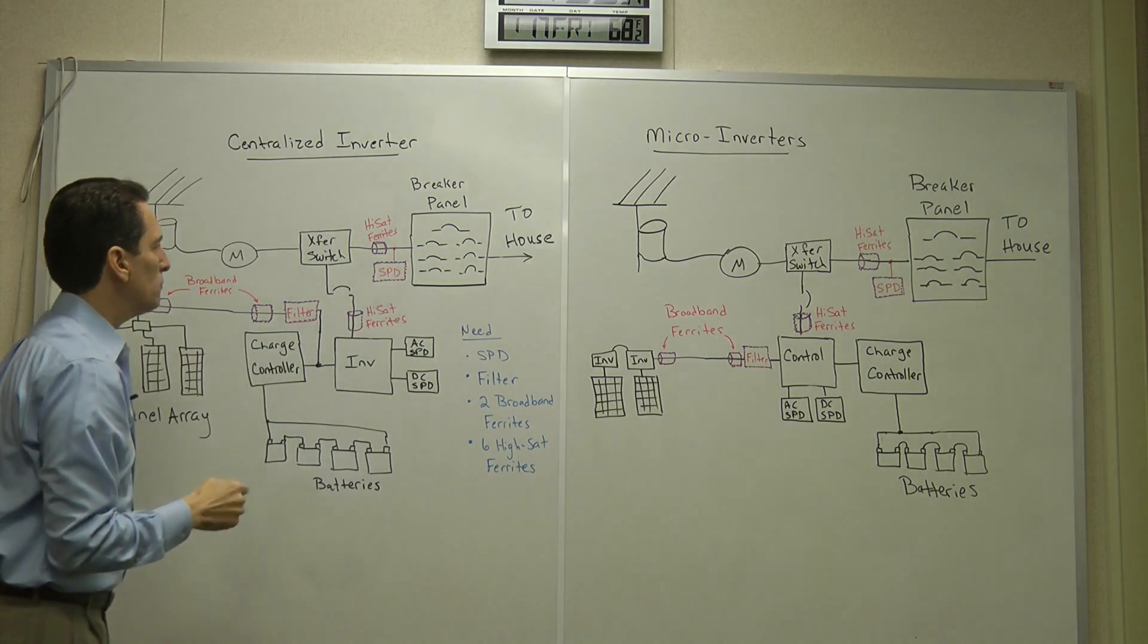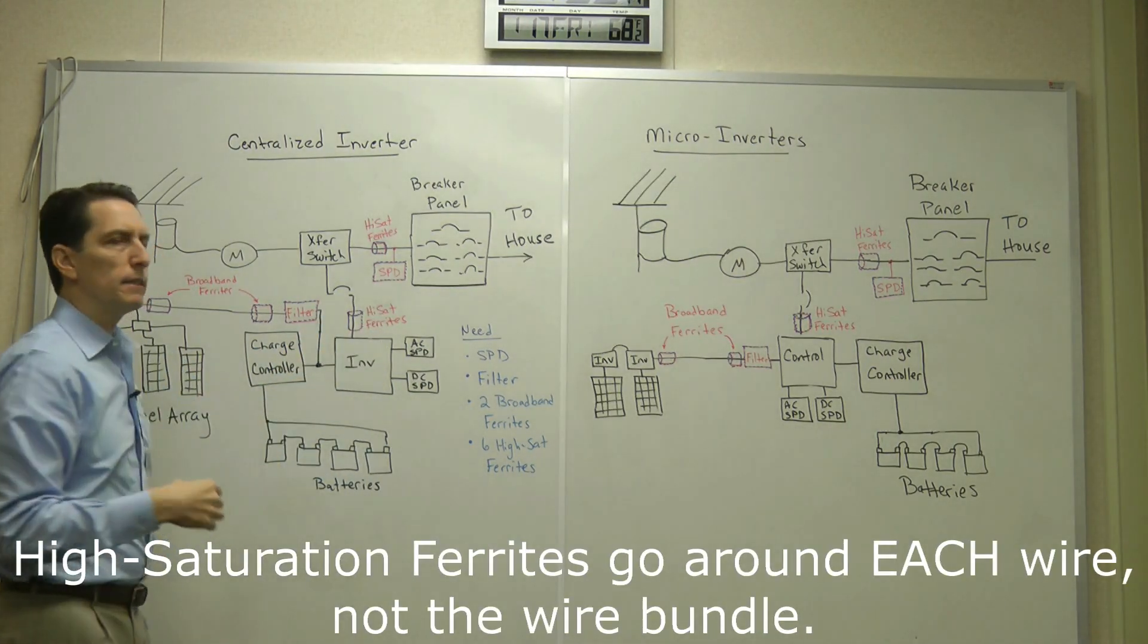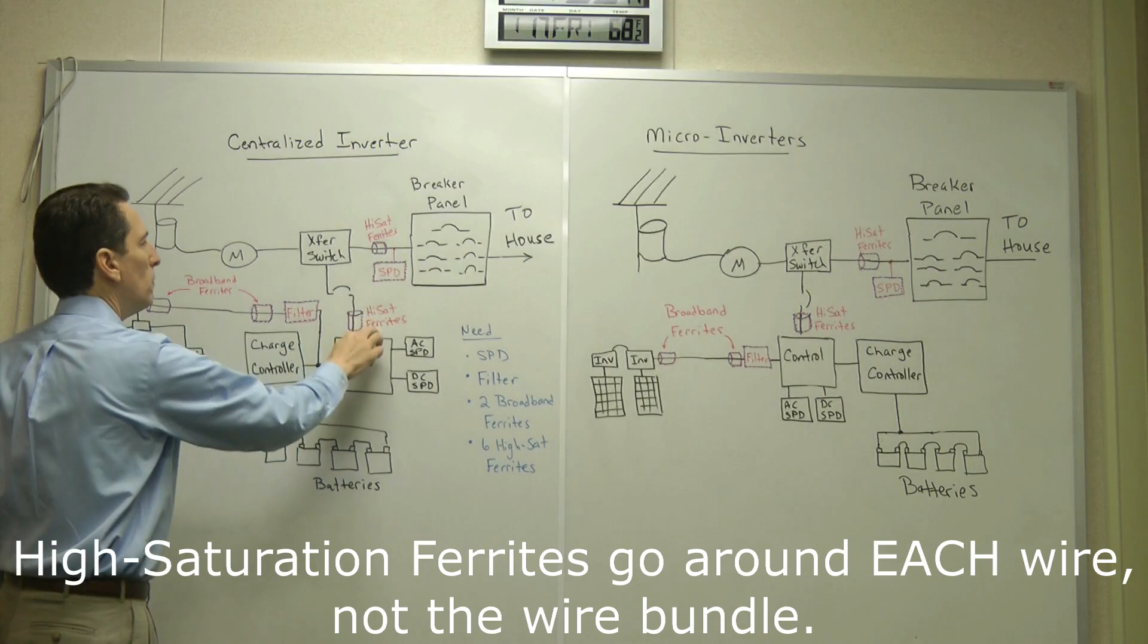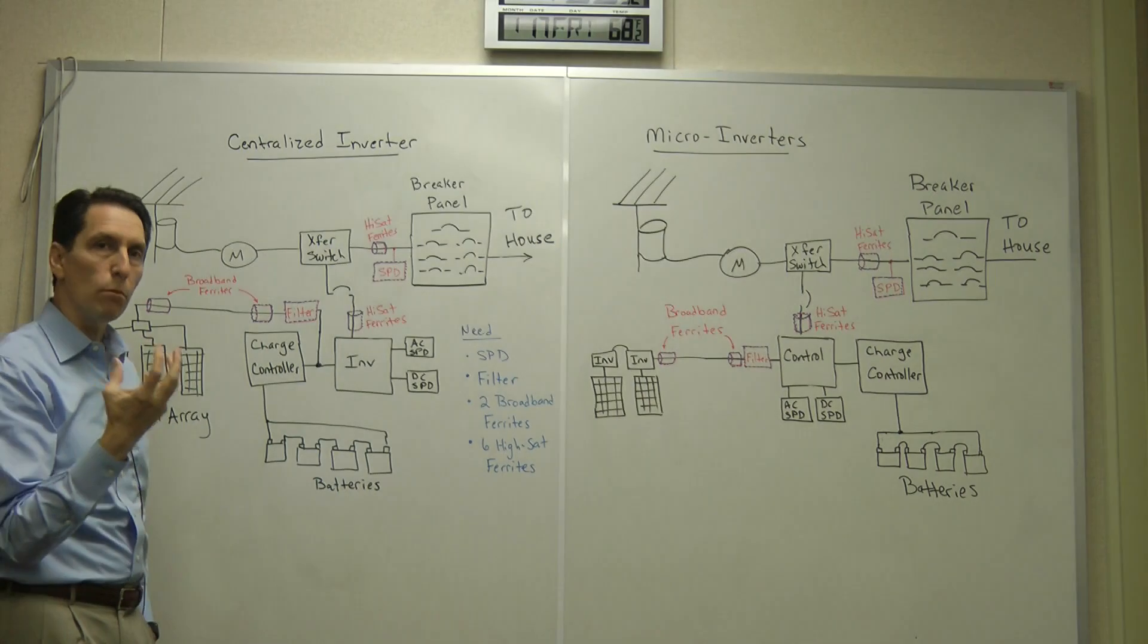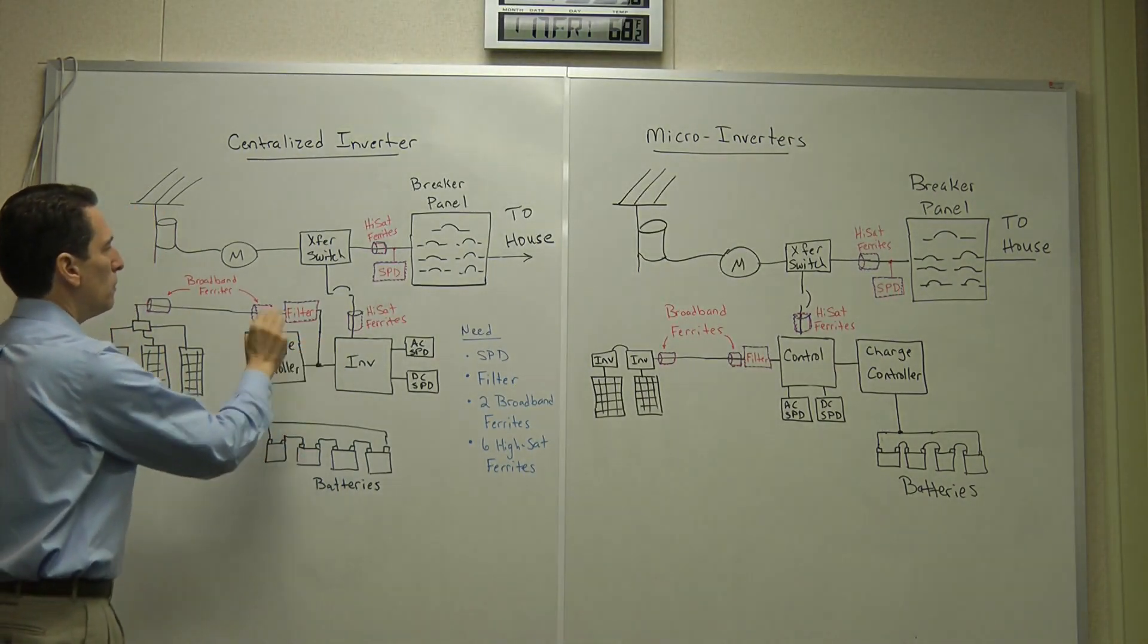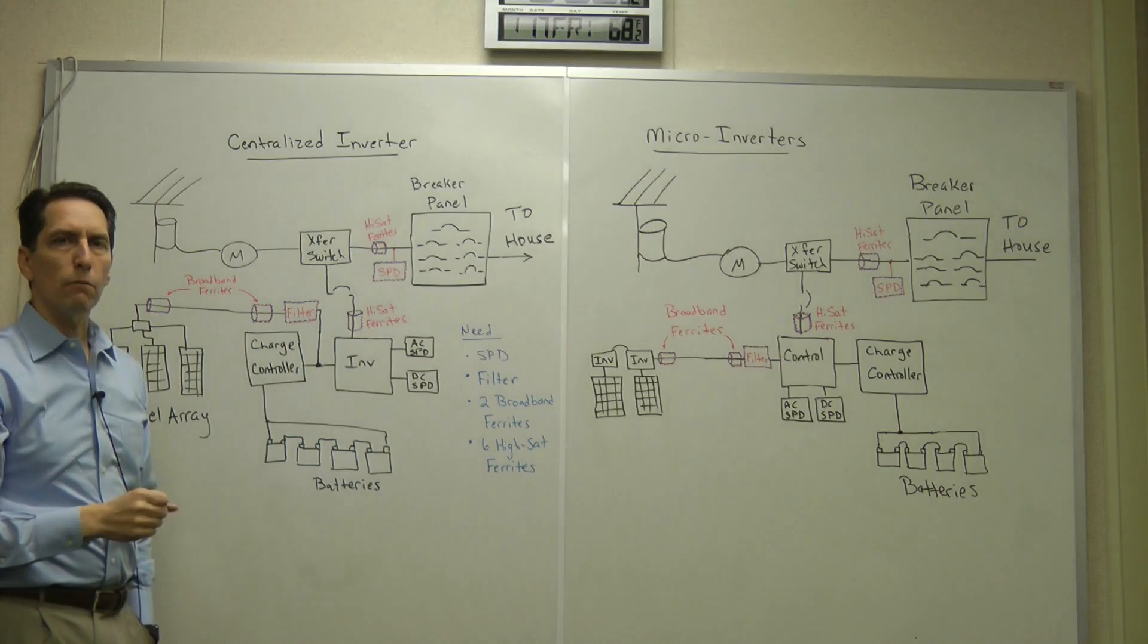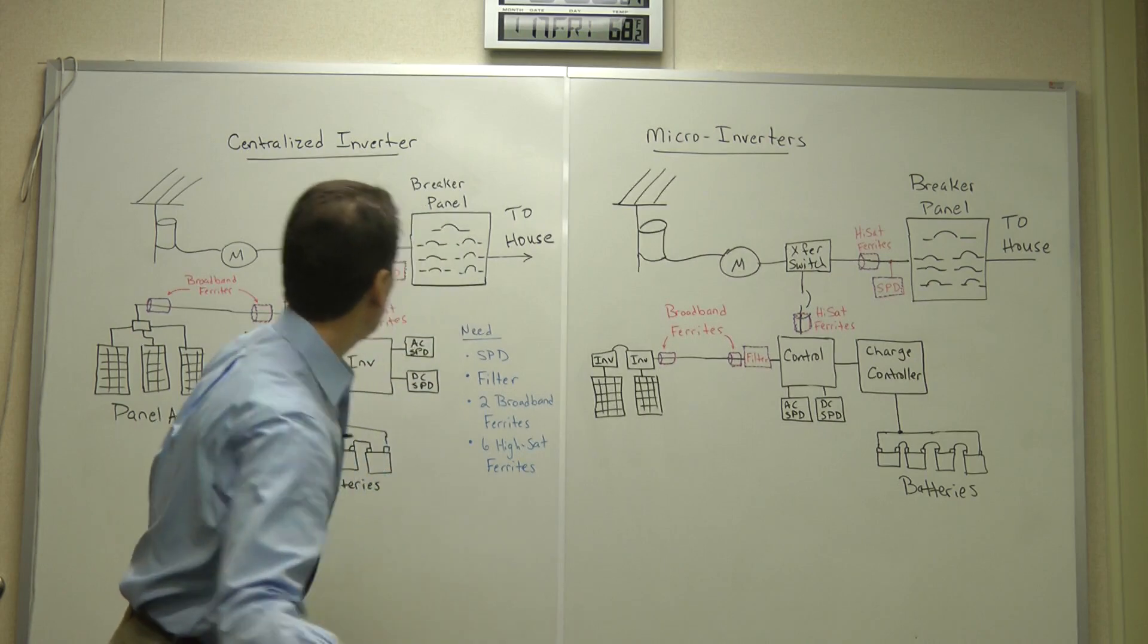Now in terms of the solar power generation, there's really just a few things you could do. You can add some of those same high saturation ferrites on the wires that go from the inverter up to the switch. That will help to keep some of the really fast, high frequency energy from coming into the system. It tries to suppress those really high frequency transients. And then the other thing you can do is you can add a filter, an inline filter that goes between the inverter and the solar panel array. Now there are a number of different filters that will do that.